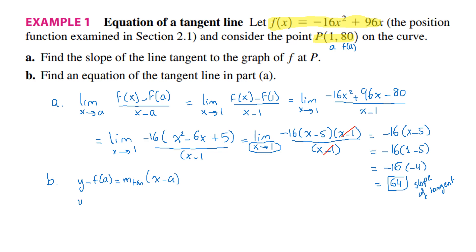y minus 80 is equal to 64 into x minus 1. For the point B having coordinates 1 and 80, so a is 1 and f of a is 80. You can do the distributive property and then add 80. You will get the final answer: y equals 64x minus 64 plus 80, which is equal to 16. So y equals 64x plus 16.